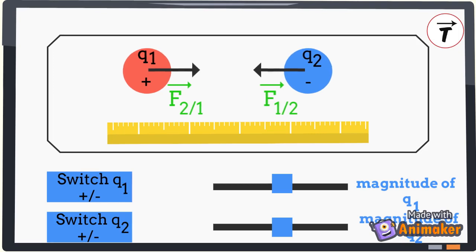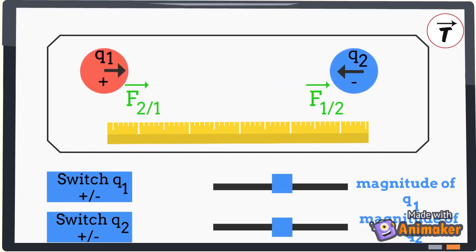In this case, we increase the distance between the two particles. The electrostatic force decreases. We can conclude that the magnitude of the electric force is inversely proportional to the distance d.